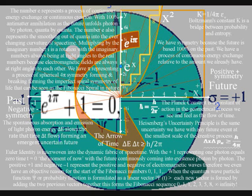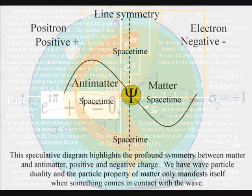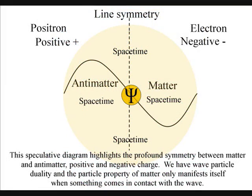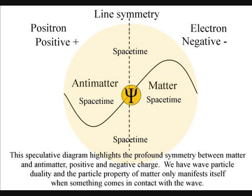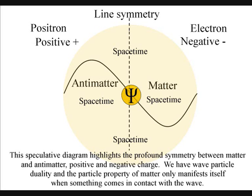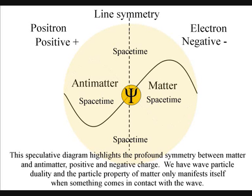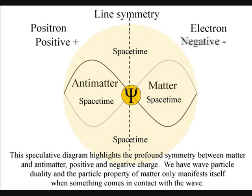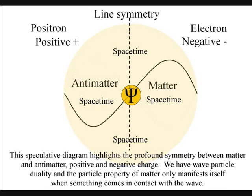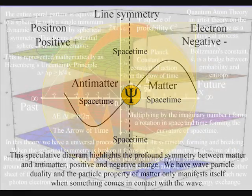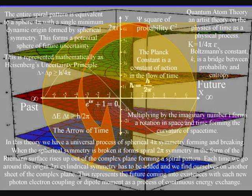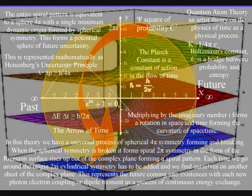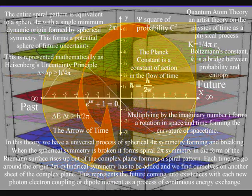The letter E also represents a process of 100% energy exchange that we have in matter-antimatter annihilation. In this theory, this represents part of the process that forms the passage of time. The antimatter annihilation represents the past being destroyed, with matter having a potential future that is continuously unfolding, photon by photon. One complete rotation puts us on another complex plane, representing a new moment in time.